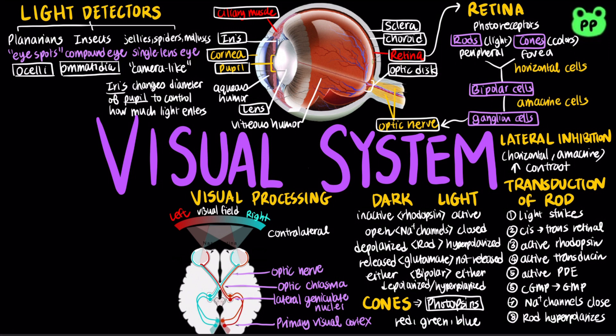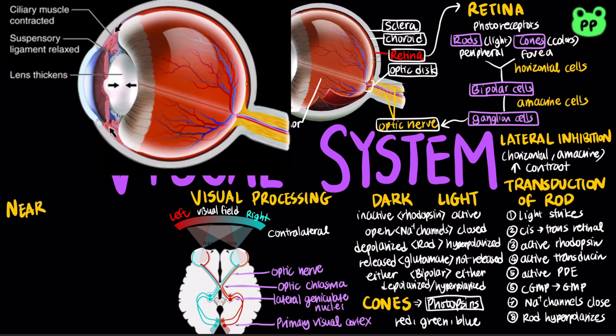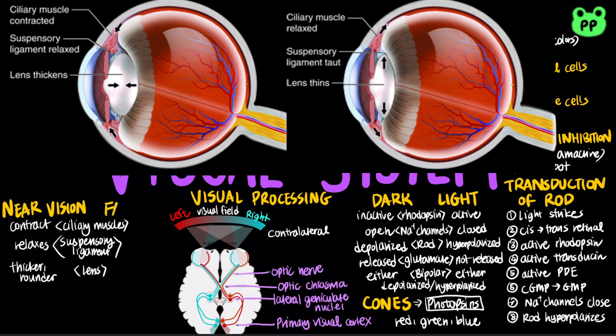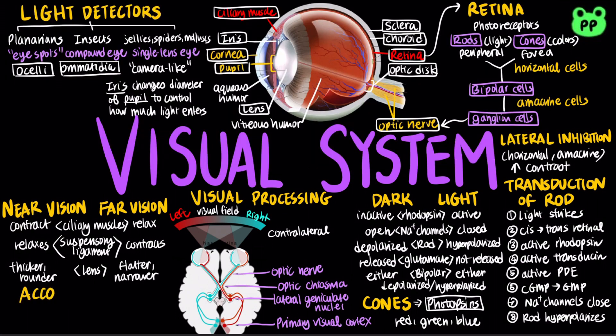The human eye focuses light by changing the shape of the lens. To see near objects, the ciliary muscles contract, relaxing the suspensory ligaments, which makes the lens thicker and rounder. To focus on distant objects, the ciliary muscles relax and the suspensory ligaments pull against the lens, making it flatter. The term accommodation refers to the change of focus from distance to near objects.